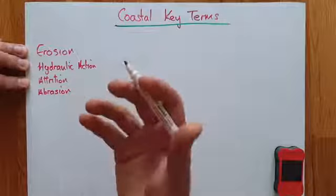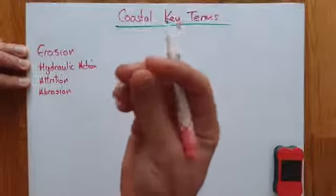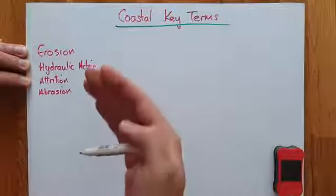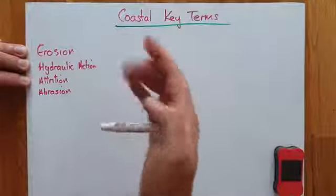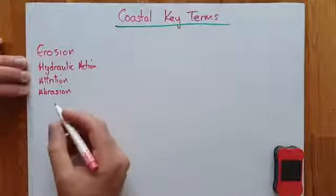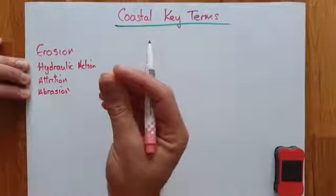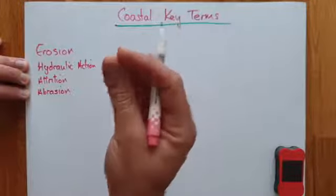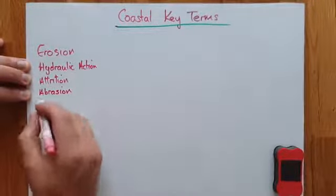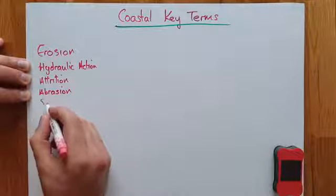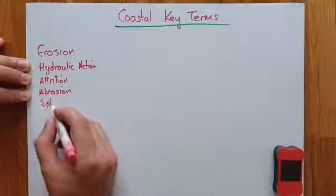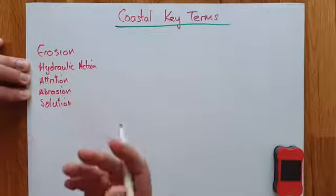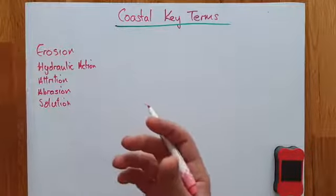Abrasion is a bit like sandpaper — all those small bits of rock, sand, and grit get washed around by the sea and wear against the rock. It also wears those bits of grit and rock down even smaller to the point where they disappear. This is called solution — it dissolves into the water, much like sugar does in hot water.